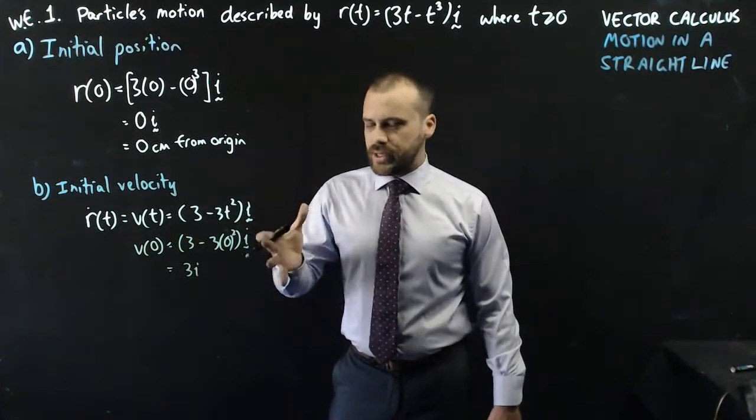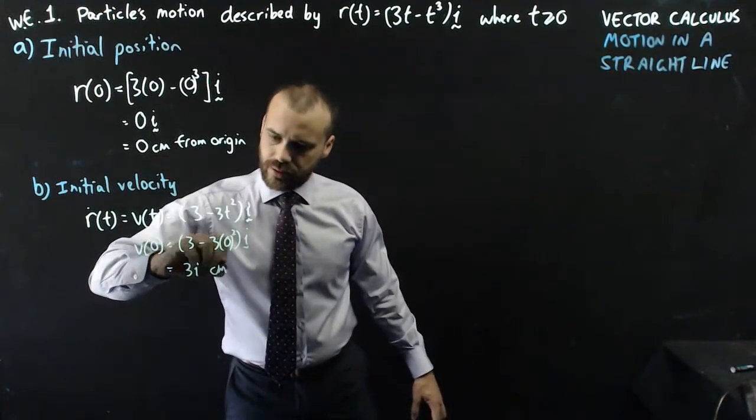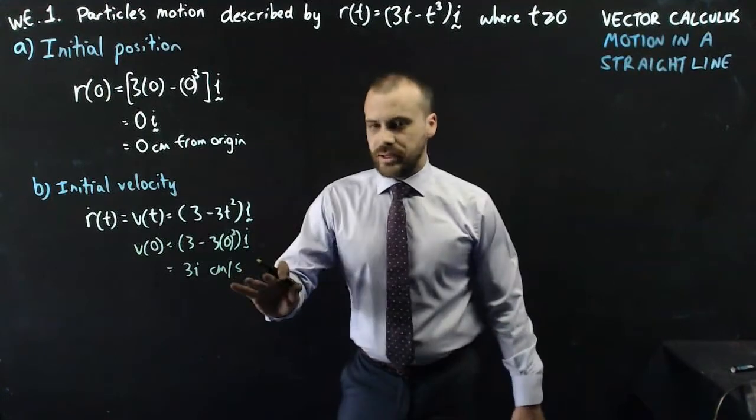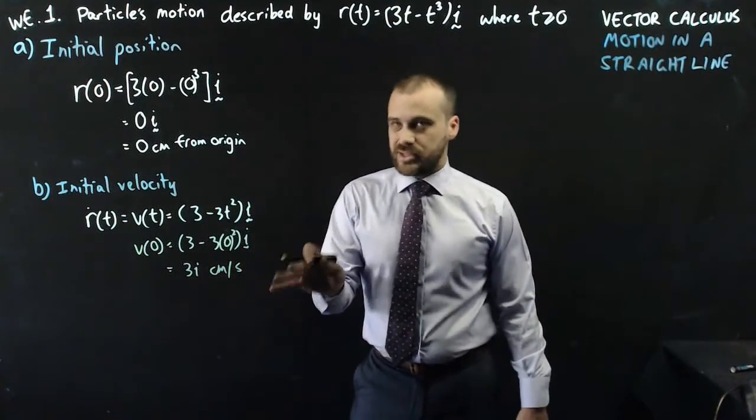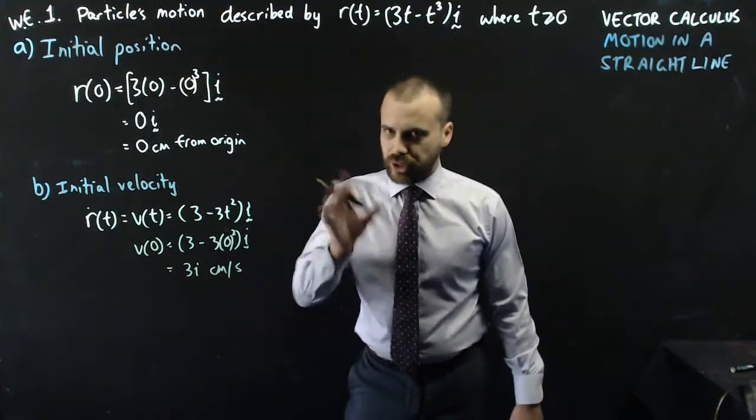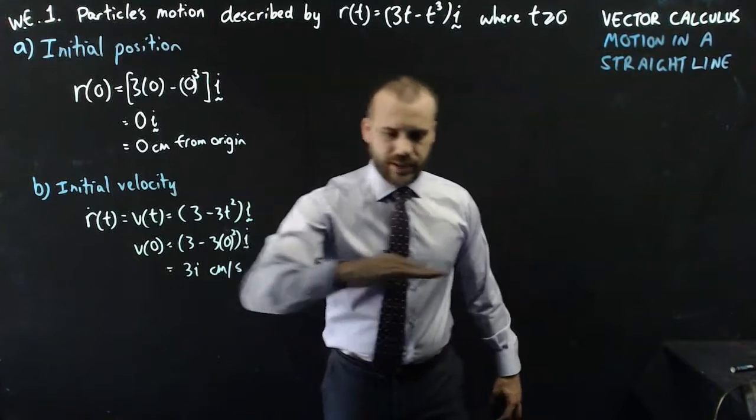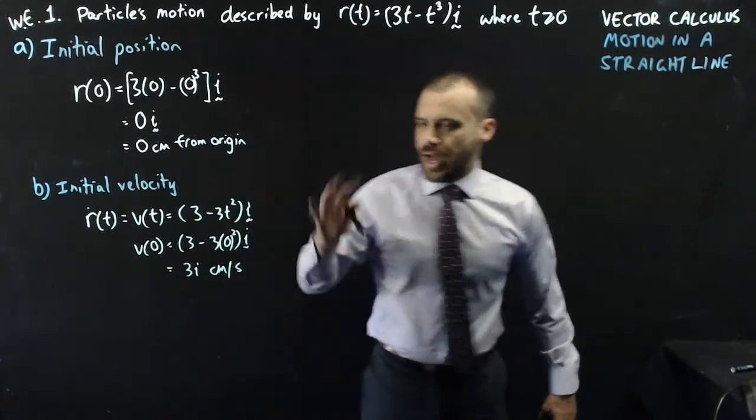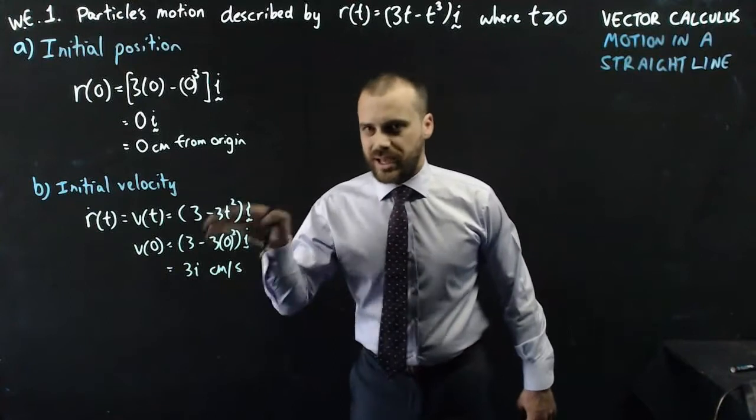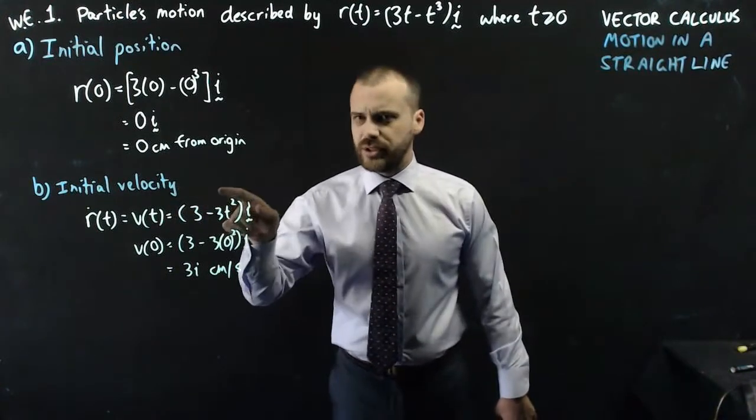Now that means it's moving at 3i, let's say, centimeters per second. Now those units, both centimeters and seconds, would be given in the question somewhere. I've been a bit lazy with my expression of my question. So this is moving in the i plane here, moving straight across like this at a speed of 3 centimeters per second at time zero. Now I just said the word speed, but I'm also talking about velocity, and they're related, but they're not the same.